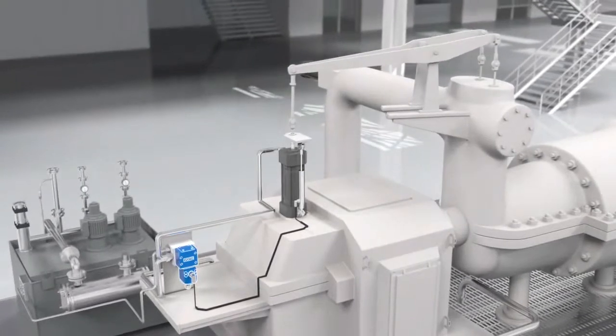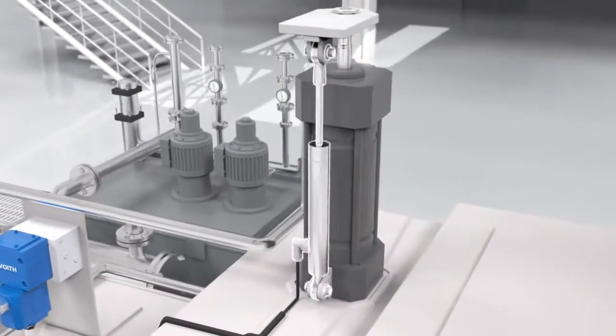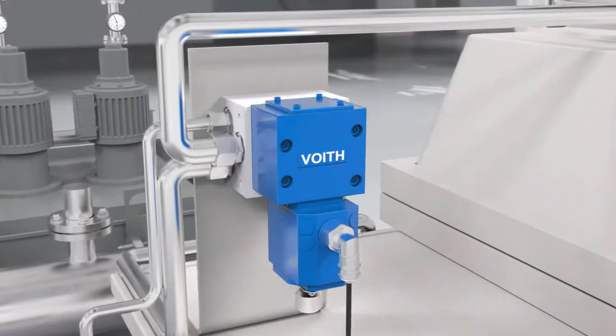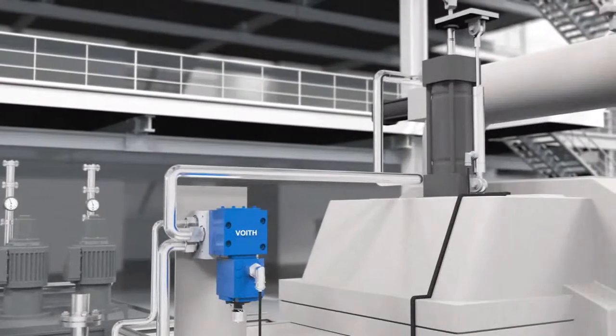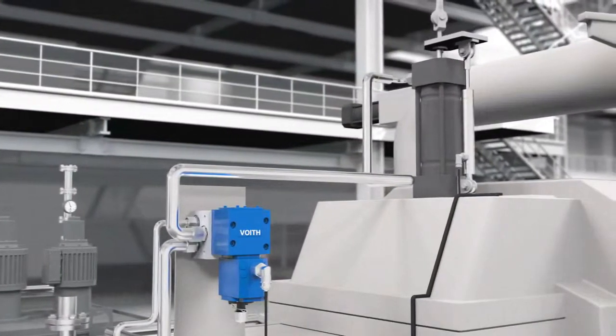The VOITH wave valve controls the steam supply using a hydraulic cylinder. A sensor measures the position of the piston rod. The wave valve is an electro-hydraulic proportional valve with an integrated position controller. Depending on the set point, the wave valve controls the position of the piston rod by means of the oil flow.